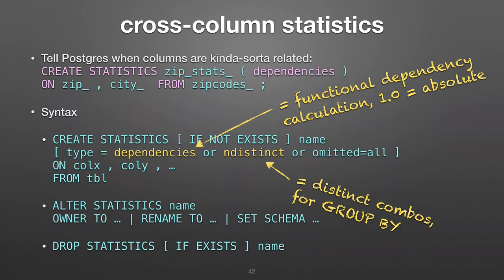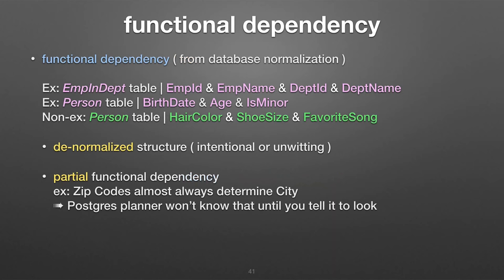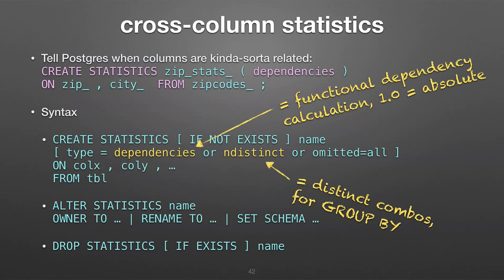Does it automatically gather this from foreign keys if you define the relationships? I don't know, but I doubt it — that would be more complicated and I doubt they would have implemented that. I think these columns have to be on the one table. You can drop these statistics later if your conditions change. There's actually a dependency number — 1.0 is how close that data relates to each other. The zip code is a partial one so you wouldn't say 1.0. This is your judgment call as to how close a fit that is.